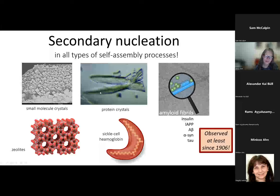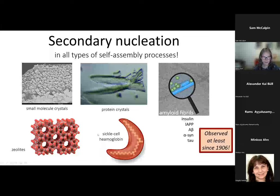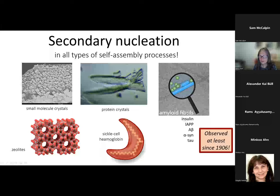Secondary nucleation in protein crystallization is a well-known phenomenon used by crystallographers to multiply crystals — like this crystal of the protein WAB 11b, where the scales are probably secondary nucleation events. You also see secondary nucleation in selenate formation, in the formation of sickle cell hemoglobin fibers, and in a range of different amyloid fibrils, including insulin, IAPP, A-beta, alpha-synuclein, tau, and probably many more. It's a very general phenomenon.